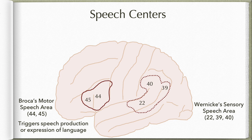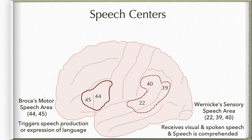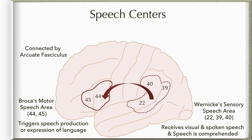We are going to continue taking all three areas — parts of area 22, 39, and 40. The role of this sensory speech area is that it receives visual and spoken speech, and speech is comprehended here. The motor speech area and sensory speech area connect with each other by a fiber bundle — an association fiber bundle — known as the arcuate fasciculus.